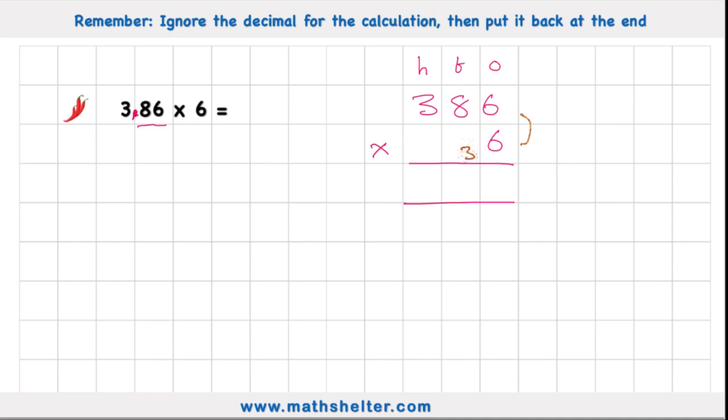6 times 6 is 36. 6 times 8 is 48. Plus my 3 is 51. Get rid of my 3. And finally, 6 times 3 is 18. Plus my 5 is 23. Get rid of my 5. Leads me an answer of 2316.